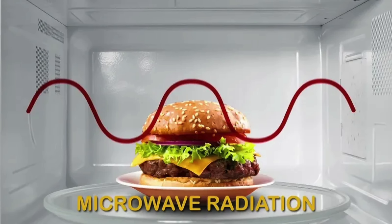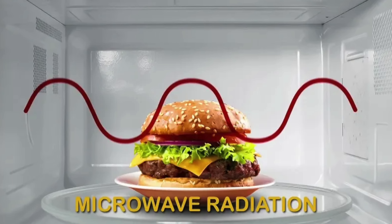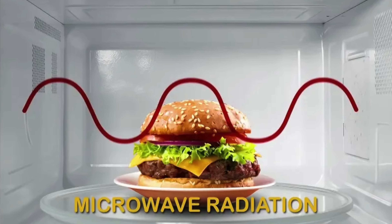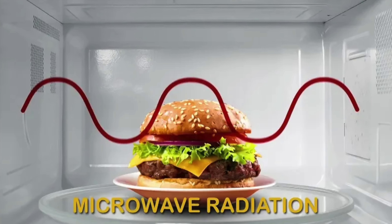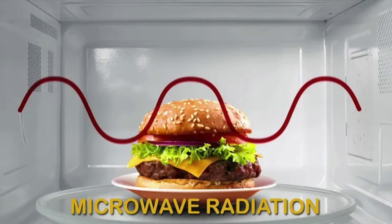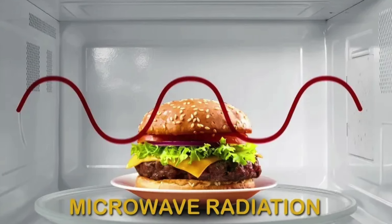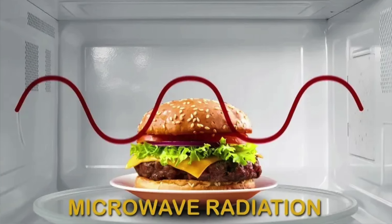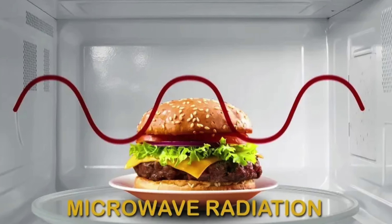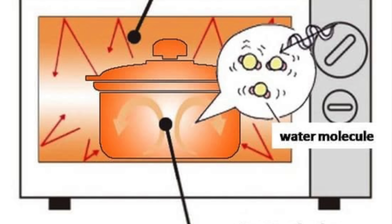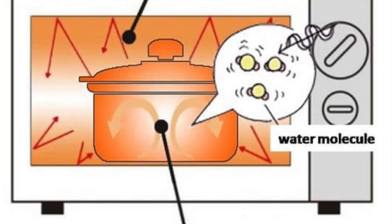First, we need to understand how microwave ovens actually use microwaves to cook our food. Let's imagine that this wave here is a microwave heating our food. The microwave oven passes microwaves throughout and cooks the food due to the microwaves transferring their energy into the water and fat molecules of the food.